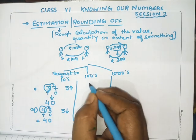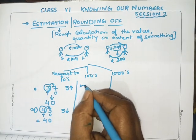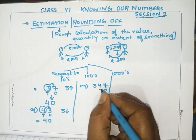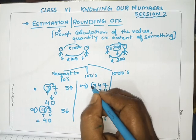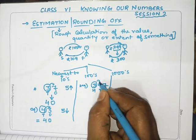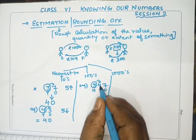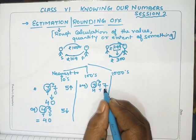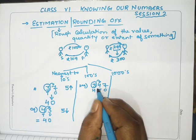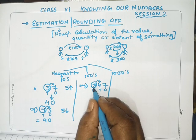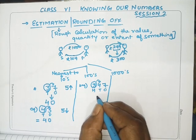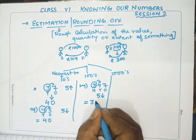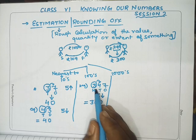Now let's look at rounding to the nearest hundred. Take the example 347. Here, 7 is in the ones place, 4 is in the tens place, and 3 is in the hundreds place. To round to the hundreds place, we check the tens digit — it is 4, which is less than 5. So the hundreds digit stays the same and the remaining places become 00. The answer is 300.